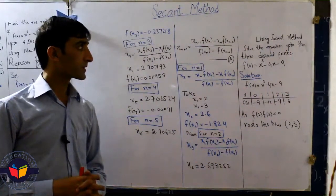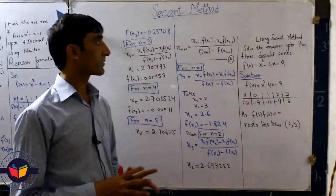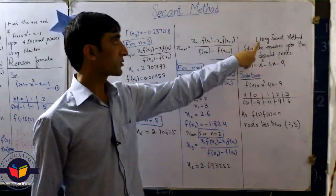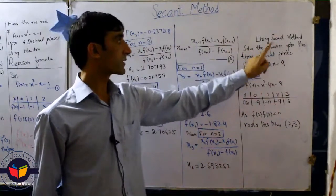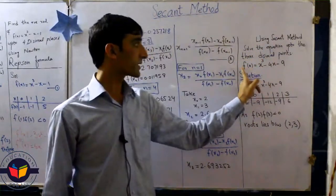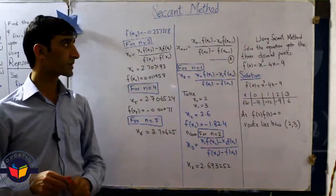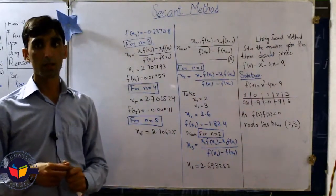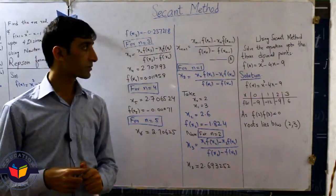For this purpose we take an example of the secant method and solve it. Here is the question: using secant method, solve the equation up to three decimal points where f of x equals x cube minus 4x minus 9. We want to calculate their approximate zeros by using secant method.